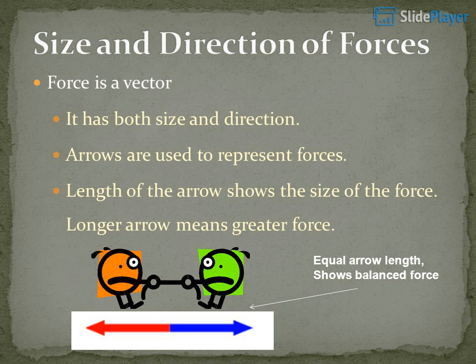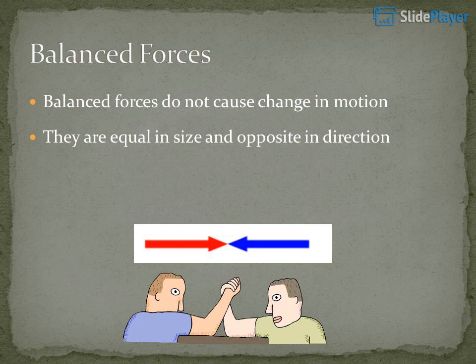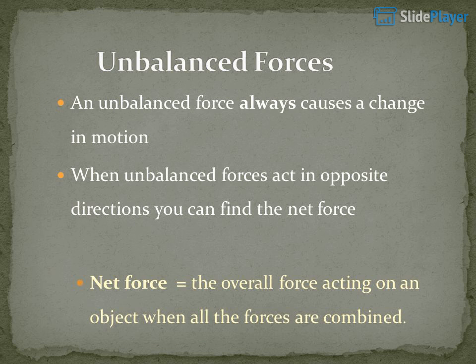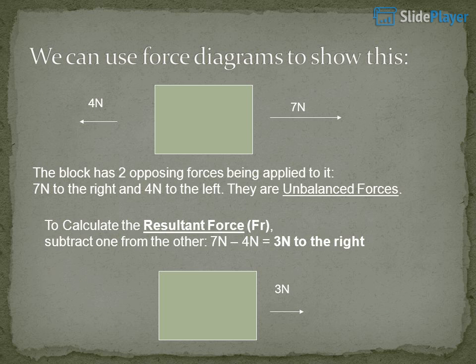Size and direction of forces: force is a vector — it has both size and direction. Arrows are used to represent forces. The length of the arrow shows the size of the force; a longer arrow means a greater force. Equal arrow lengths show balanced forces. Balanced forces do not cause a change in motion — they are equal in size and opposite in direction. Net force equals the overall force acting on an object when all forces are combined. We can use force diagrams to show this.